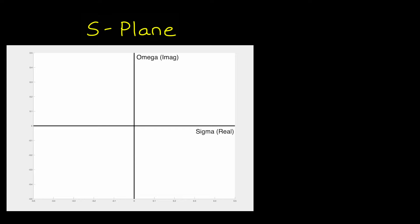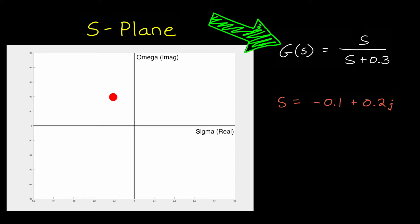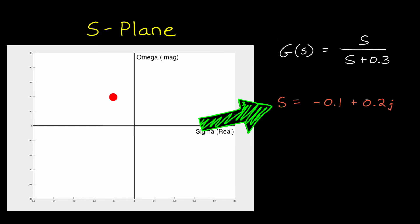Remember, s is a complex variable that consists of the real component sigma and the imaginary component omega. So all of the values of s can be displayed on a 2D plane. So for example, s equals minus 0.1 plus 0.2j would be right here. Now, a transfer function is a function of s. So we can calculate the value of this function, s over s plus 0.3, for this value of s.